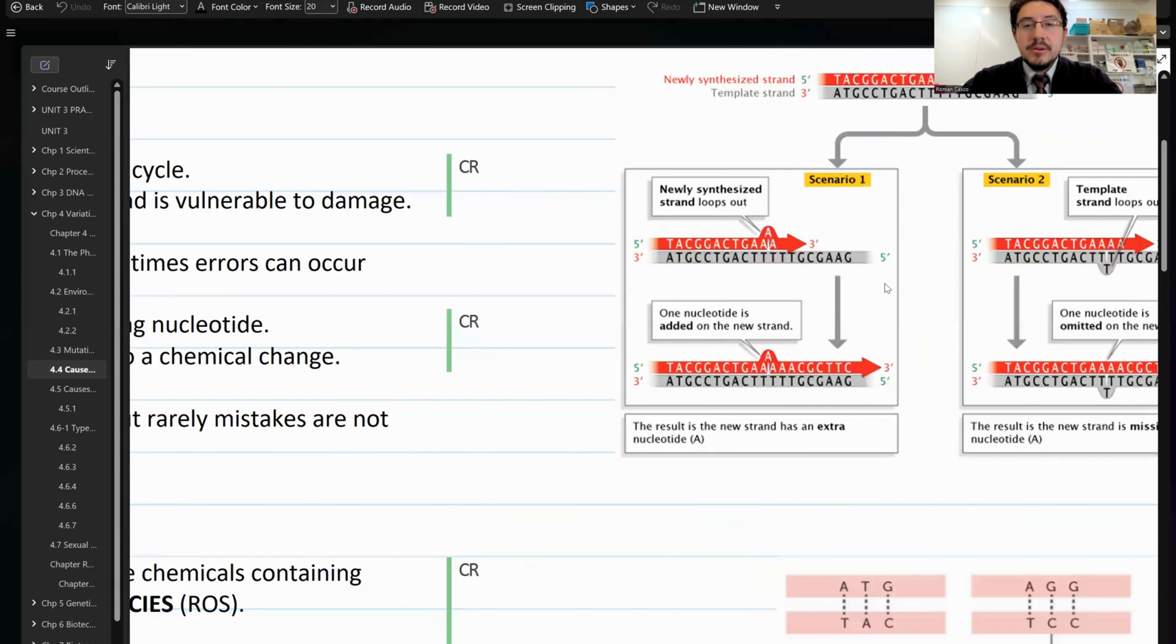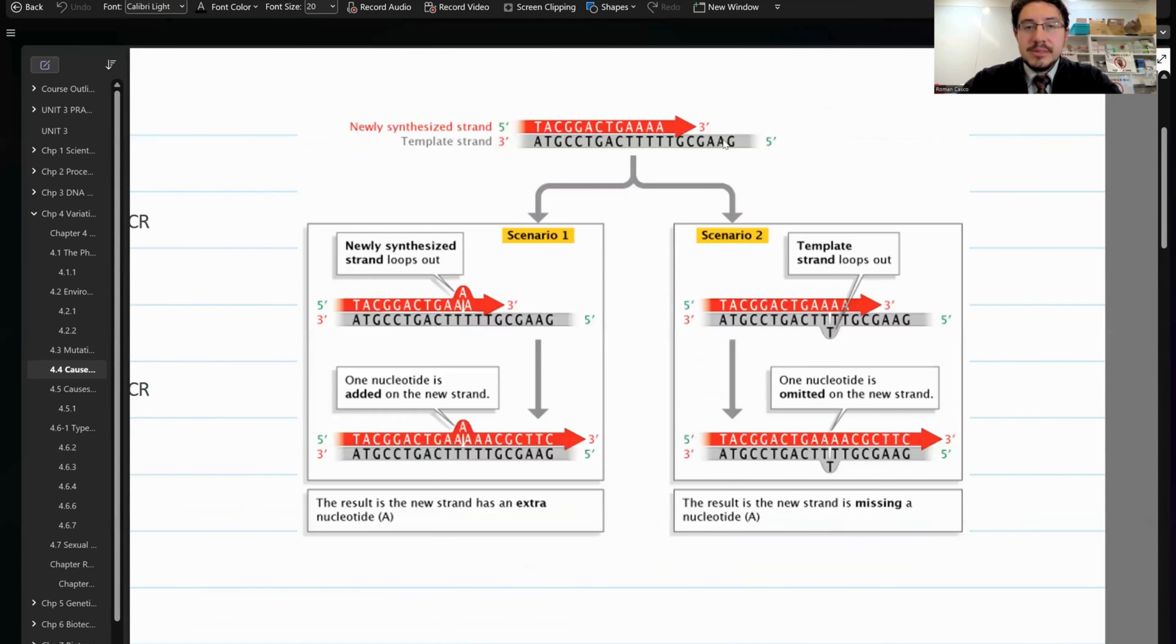If you take a look at this little diagram here, you have a template strand of DNA and that newly synthesized strand that's in the process of being formed. It is possible that depending on the sequence, you can have the newly formed strand kind of bump out just because there's a similarity in nucleotide bases. So there's like a little bulge coming out where one of the nucleotides wasn't placed correctly. There's also a scenario where the template strand gets that little bulge and loops out.